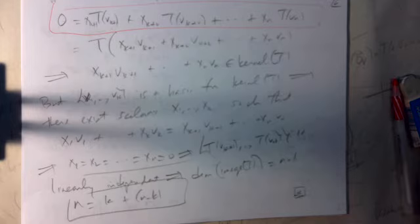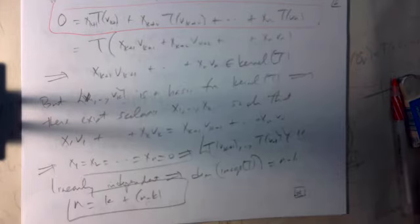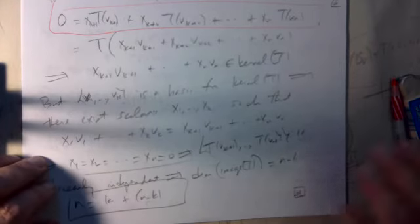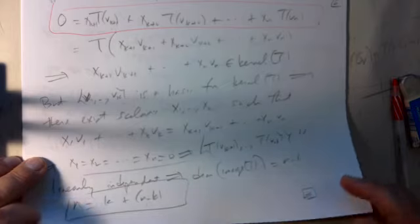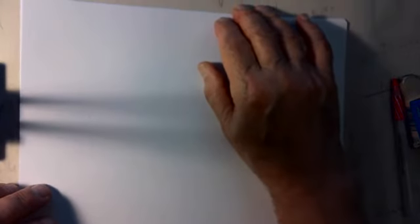Now I want to explain how you can actually represent a linear transformation on a vector space once you have a basis. This basically shows that every linear transformation corresponds to a matrix.